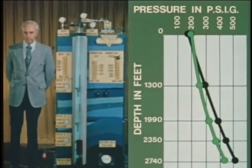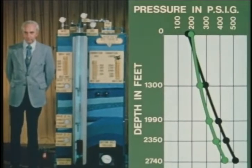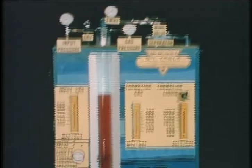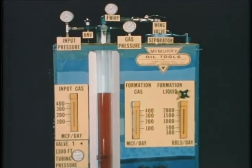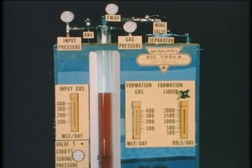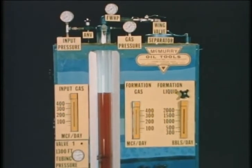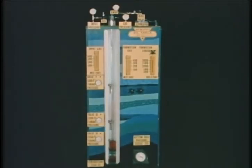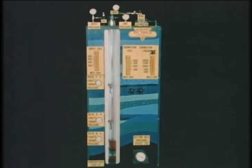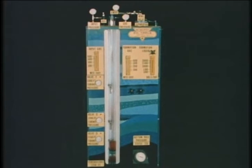In film number one, we saw how a change in gas rate affected the flowing pressure gradient of the well. In film number two, we found that a reduction in gas rate below a certain point would allow a well to die. In this third film in the series, we will study the effect of gas rates and depth of injection on well performance. Our study of gas rate effects will consider the effects of both formation gas and injected gas.